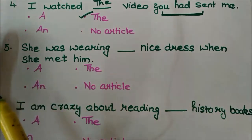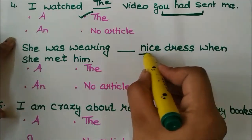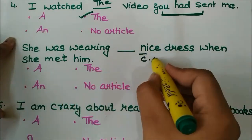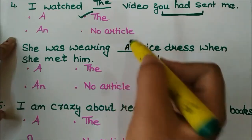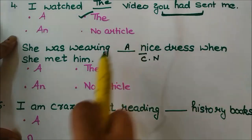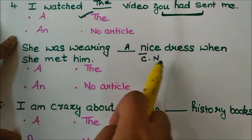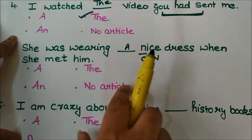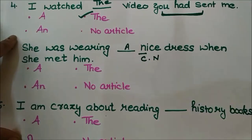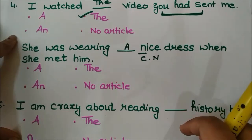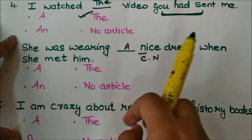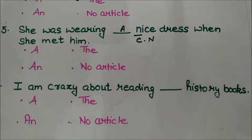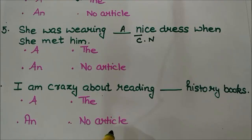Next question: 'She was wearing ___ nice dress when she met him.' The word 'nice' gives a consonant sound. Why not 'the'? Because there can be a lot of nice dresses — she is not wearing one single particular dress that is unique. So the answer is 'a': 'She was wearing a nice dress when she met him.'